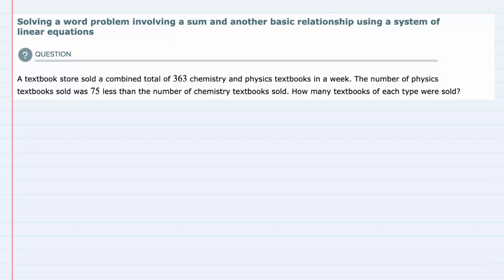So we know the approach is going to be using a system of linear equations. That's going to help us decide how to approach the problem. Looking at the context, a textbook store sold a combined total of 363 chemistry and physics textbooks in a week. The number of physics textbooks sold was 75 less than the number of chemistry textbooks sold. How many textbooks of each type were sold?